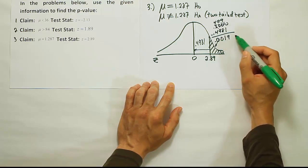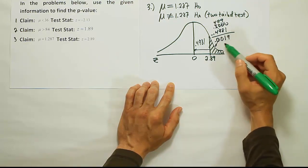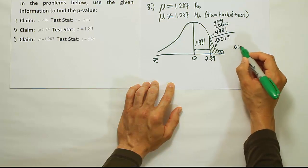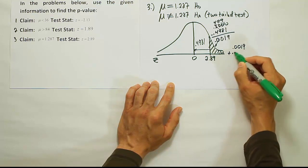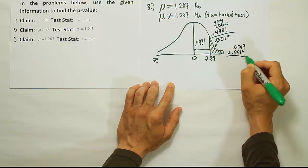However, that's not our p-value, because this is a two-tailed test. We have to double it, so we're going to do 0.0019 plus 0.0019, or you can just multiply by 2.